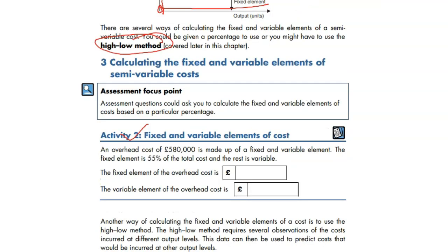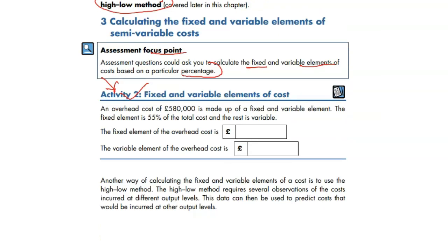Activity 2. Before that, assessment focus point. Assessment questions could ask you to calculate the fixed and variable elements of cost based on a particular percentage. Let's check it out then. Assessment style question. Very simple, just stay focused.